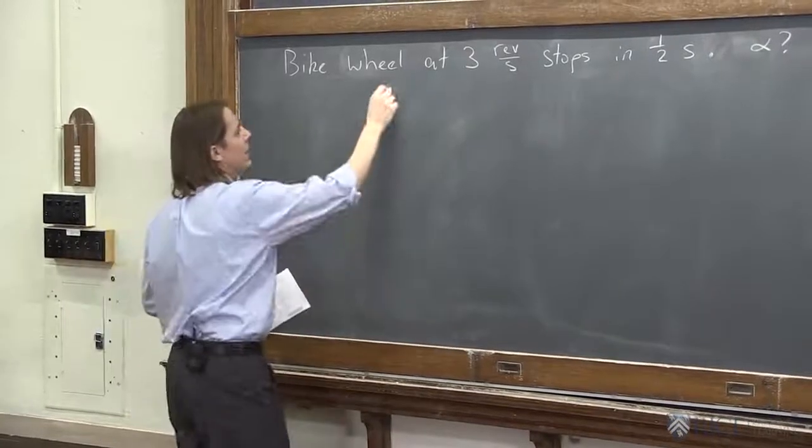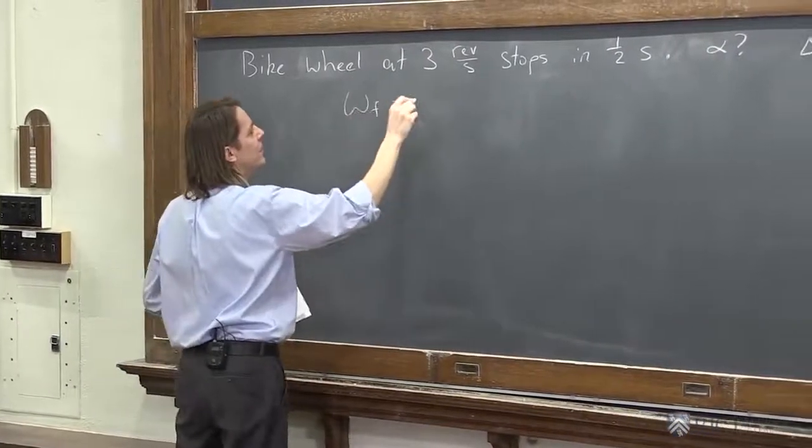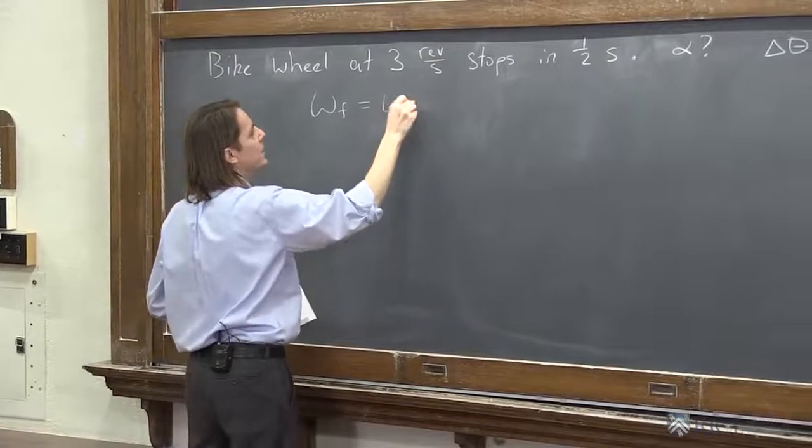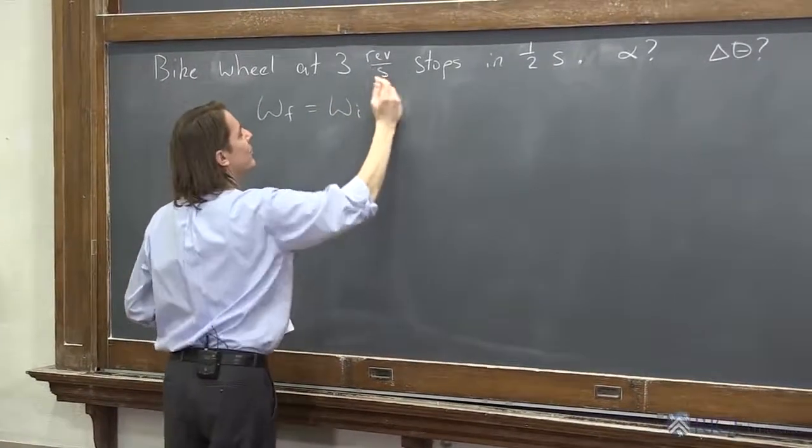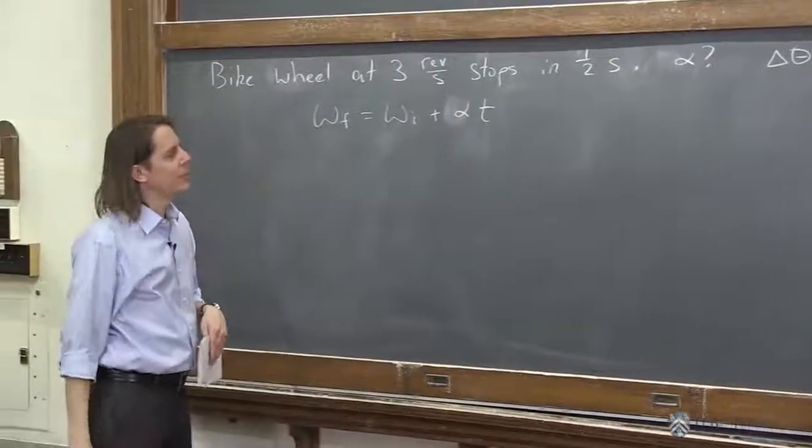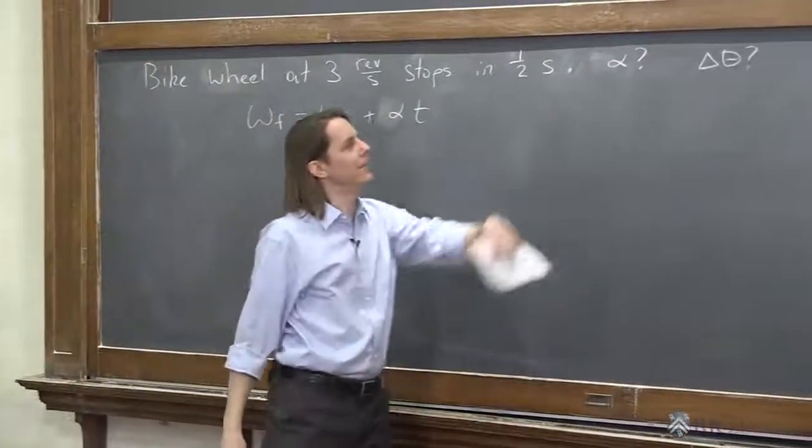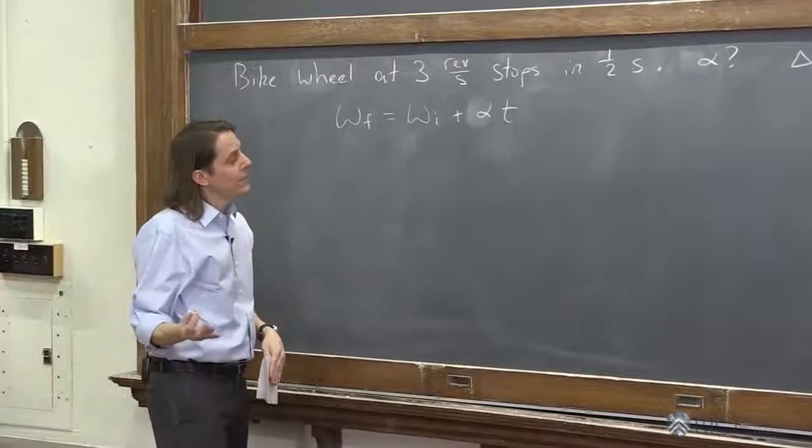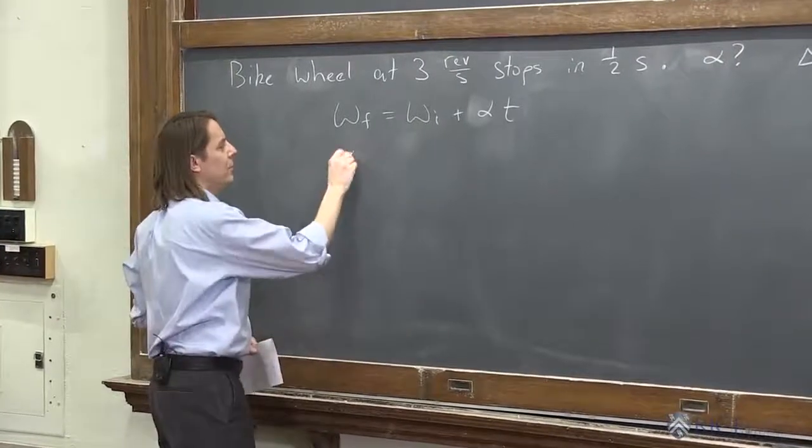In this case, the angular version: omega final equals omega initial plus alpha times t. That's really all we need to get started to find alpha. So what was the final angular velocity? It was zero. I stopped it.